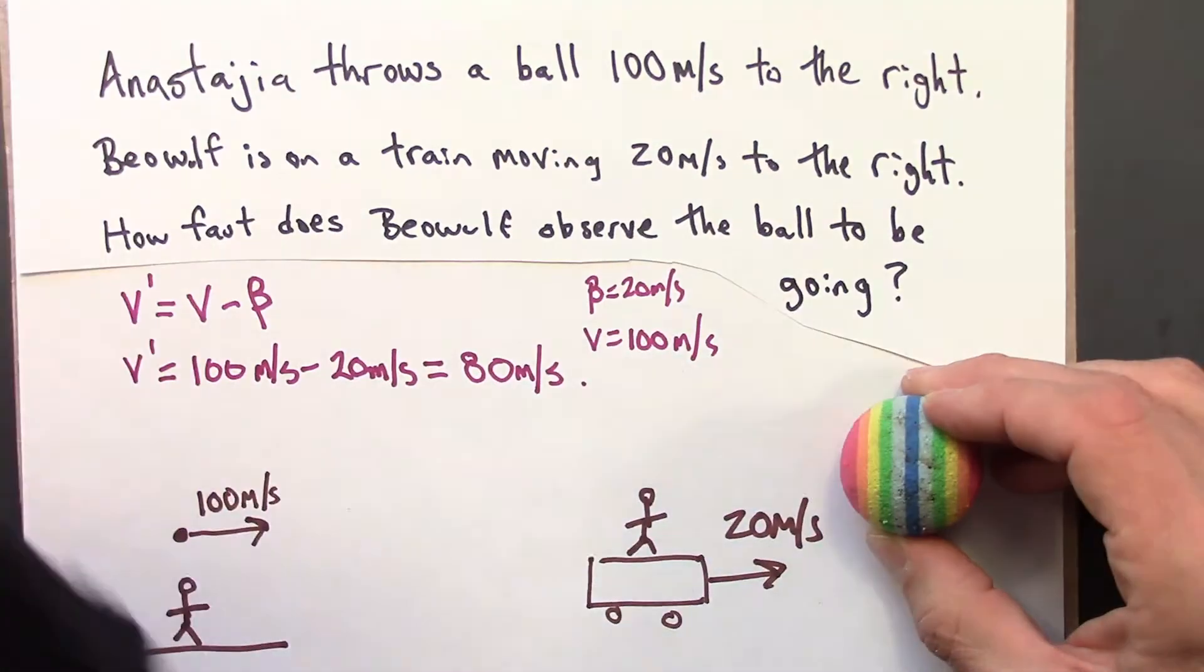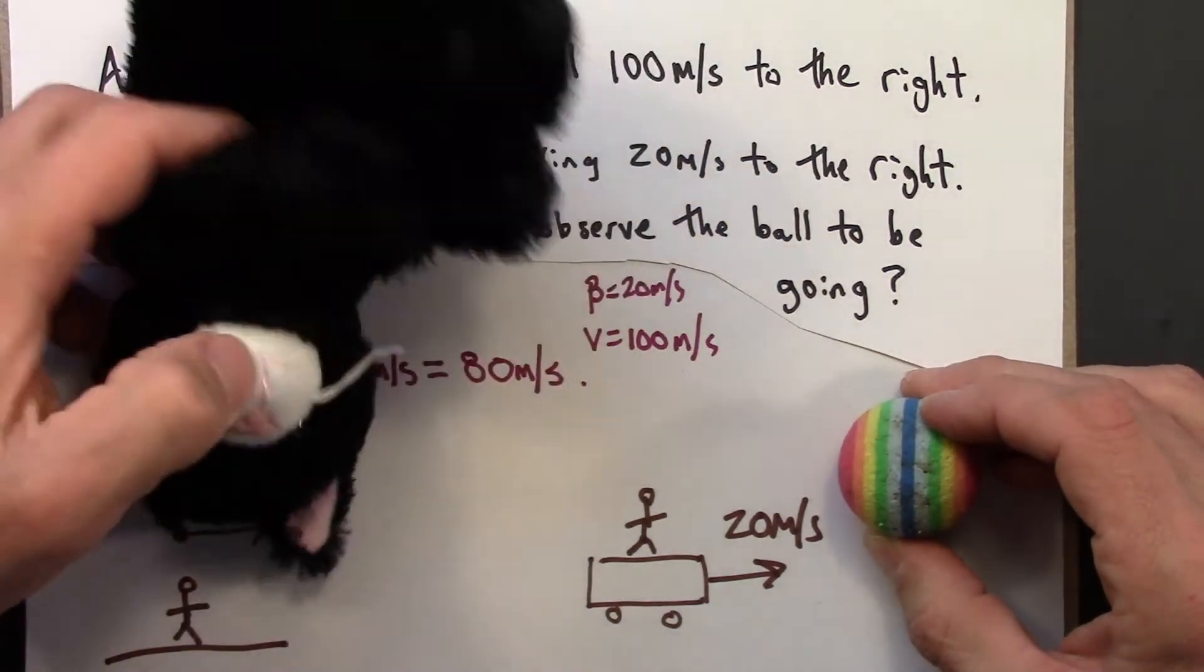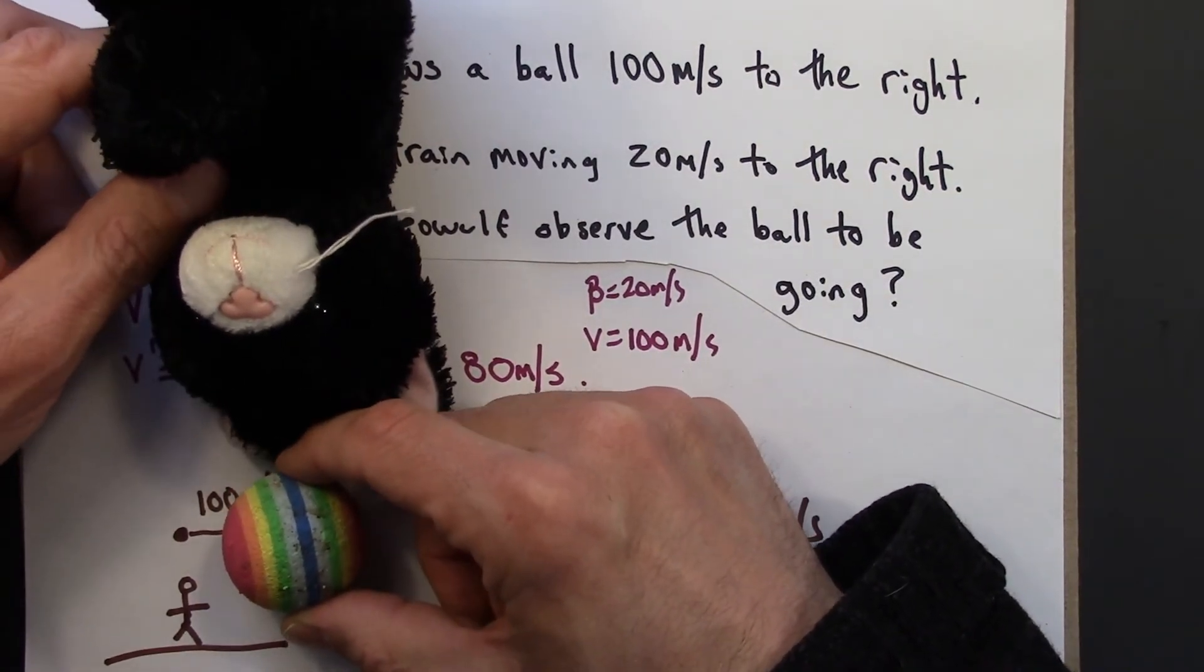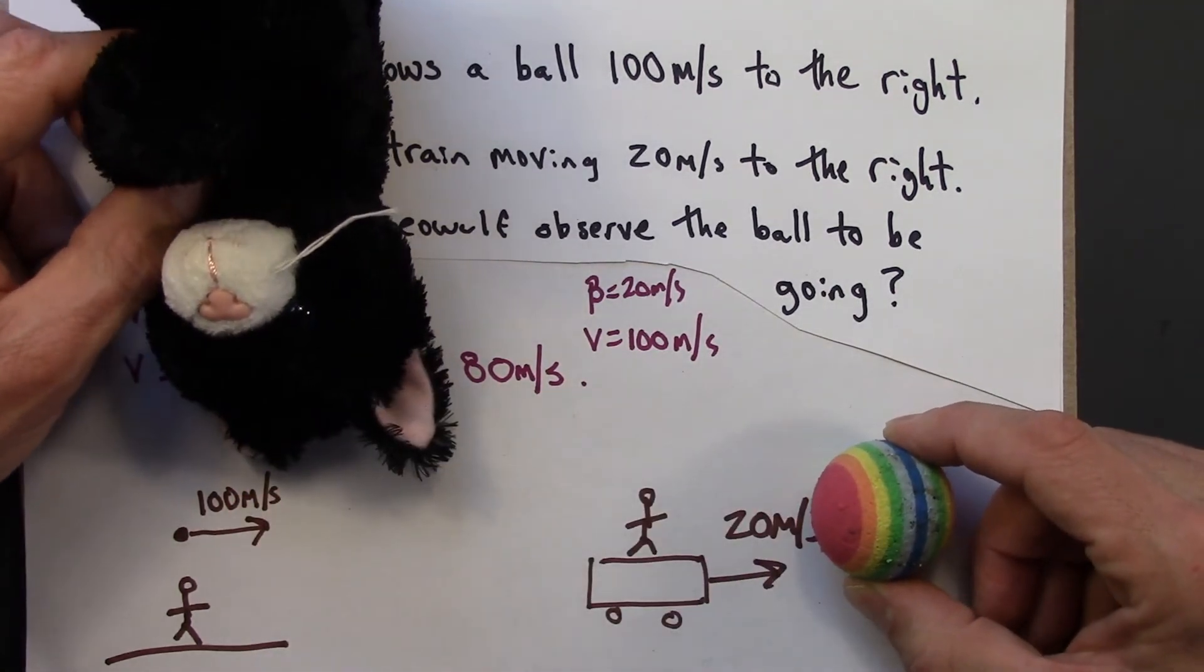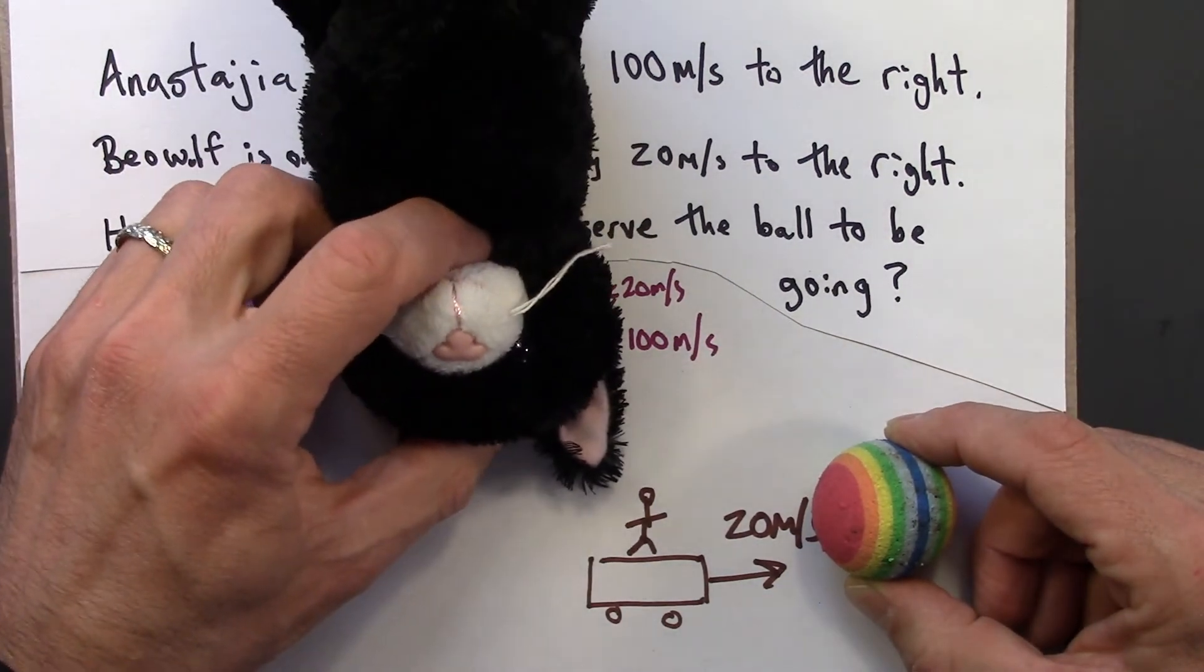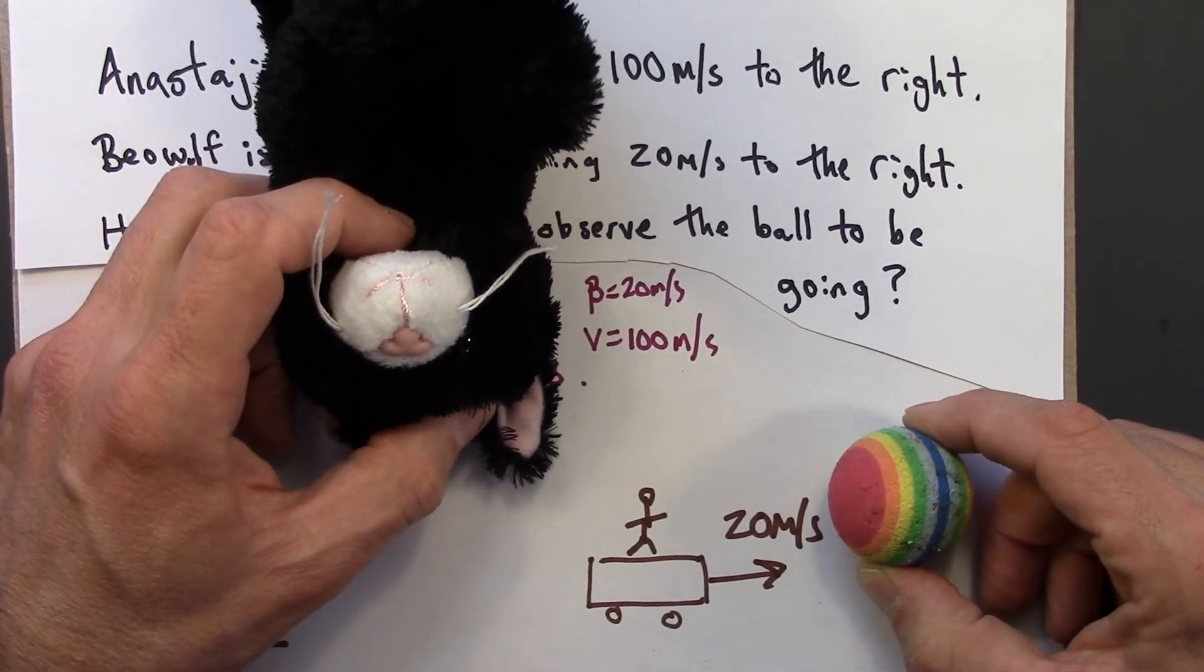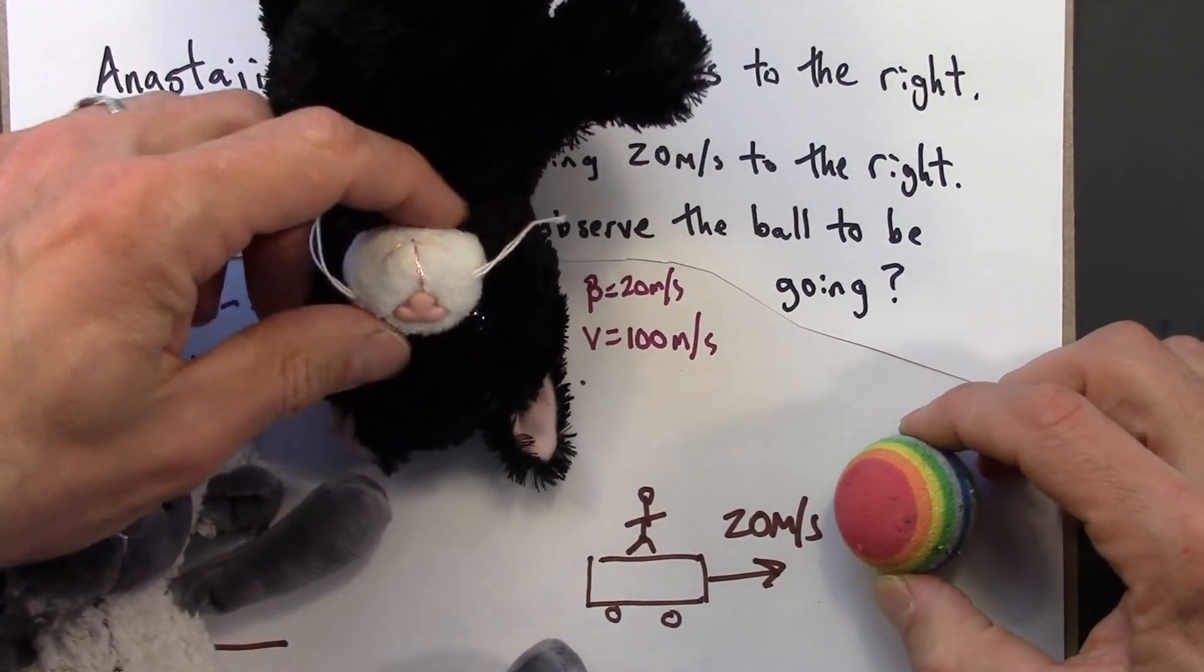So now let's say we've got Beowulf, who I guess maybe he's going to be upside down for a moment. So Anastasia throws the ball, and it travels 100 meters in one second. During that one second, Beowulf travels 20 meters because Beowulf is traveling at 20 meters per second. So the ball is now only 80 meters away from Beowulf, whereas it would still be 100 meters away from Anastasia.